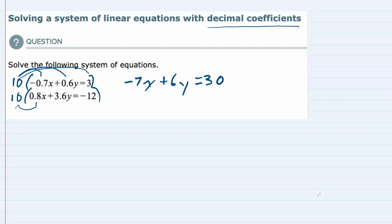Distributing, 10 times 0.8x moves it one place to the right, that's a positive 8x. Multiplying the 10 by the 3.6y gives us a positive 36y, and then multiplying the 10 times the -12 gives us a negative 120.